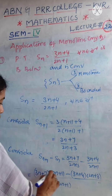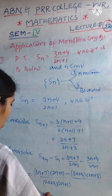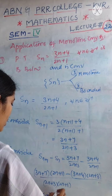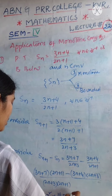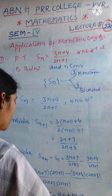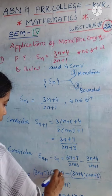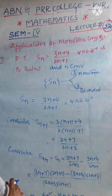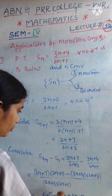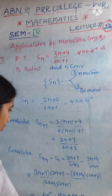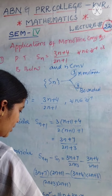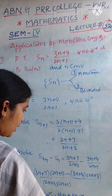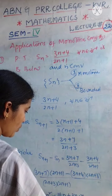The numerator becomes (3n+7)(2n+1) minus (3n+4)(2n+3). Let us observe whether this is a positive or negative quantity. Expanding the first product: 6n² + 3n + 14n + 7 = 6n² + 17n + 7. Expanding the second product: 6n² + 9n + 8n + 12 = 6n² + 17n + 12.